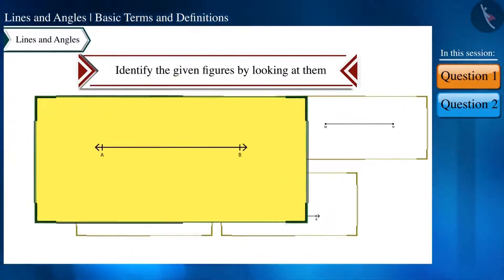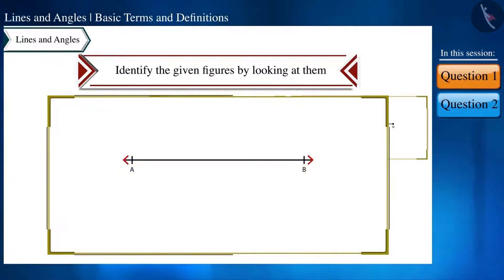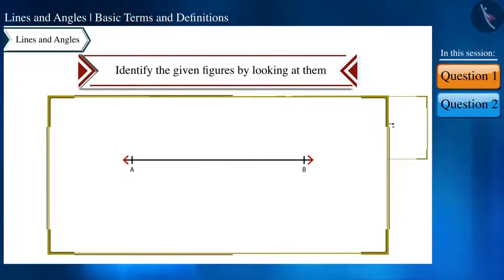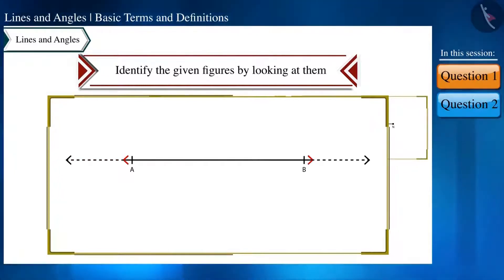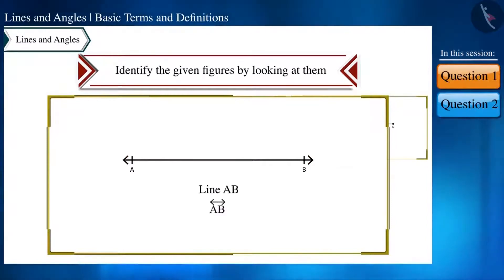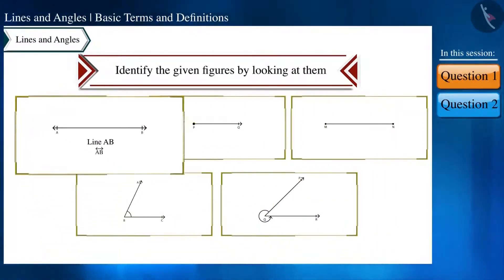In the first figure, both sides have an arrow symbol, showing it can be extended in both directions. Therefore this is a line — line AB — and we represent it accordingly.